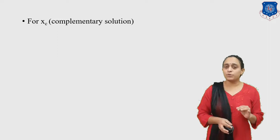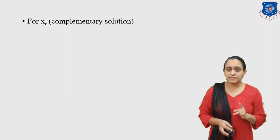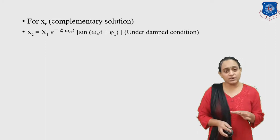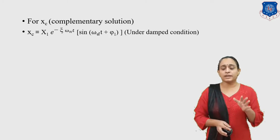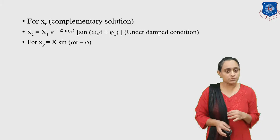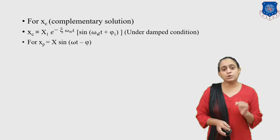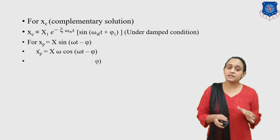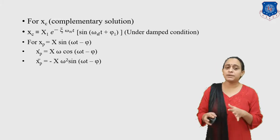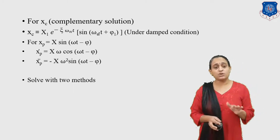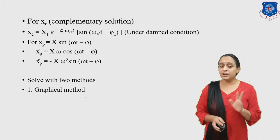The complementary solution Xc satisfies Mẍ + Cẋ + Kx = 0. For an underdamped system: Xc = X1·e^(−ζωn·t)·sin(ωd·t + φ1). For the particular integral, we assume Xp = X·sin(ωt − φ), so Ẋp = Xω·cos(ωt − φ) and Ẍp = −Xω²·sin(ωt − φ). We can solve using either the graphical or analytical method — the graphical method is comparatively easier.